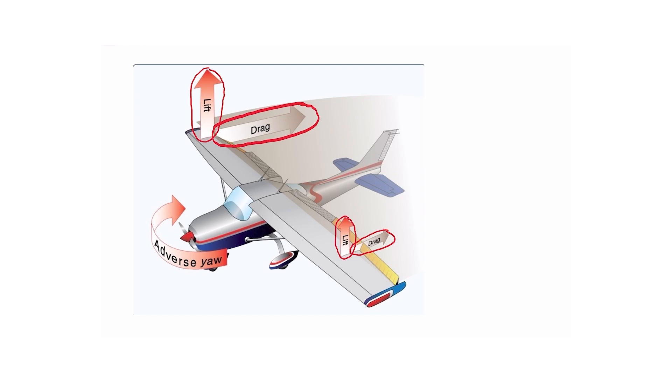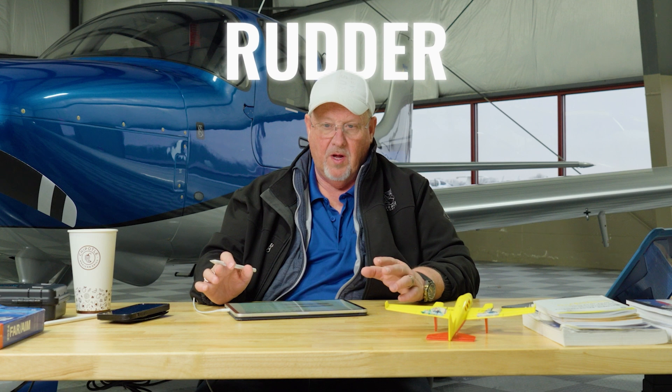So now, how do we correct for adverse yaw? Well, first and foremost, the way we do it is use our rudder. So when we use our rudder, that corrects for adverse yaw.